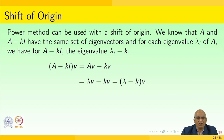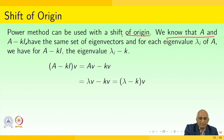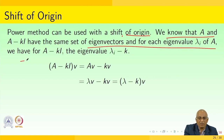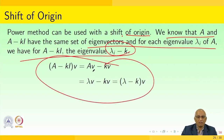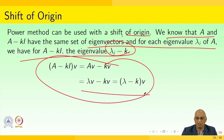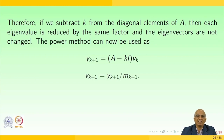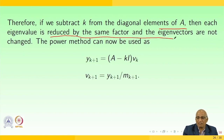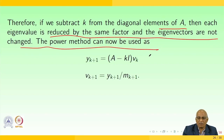The power method can be used with a shift of origin. We know that A and A − kI have the same set of eigenvectors, and for each eigenvalue λᵢ of A, the eigenvalue of A − kI is λᵢ − k. So (A − kI)v = Av − kv = λv − kv = (λ − k)v. Therefore, if we subtract k from the diagonal elements of A, each eigenvalue is shifted by the same factor and the eigenvectors are unchanged. The shifted power method: yₖ₊₁ = (A − kI)vₖ and vₖ₊₁ = yₖ₊₁ / mₖ₊₁.